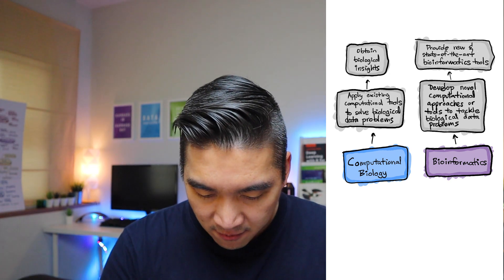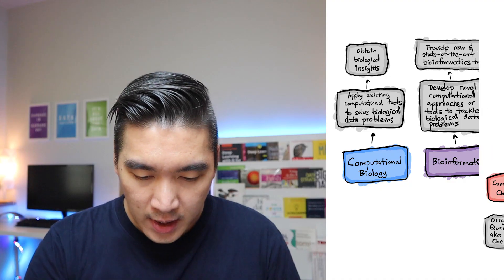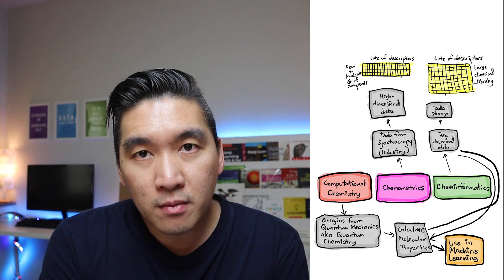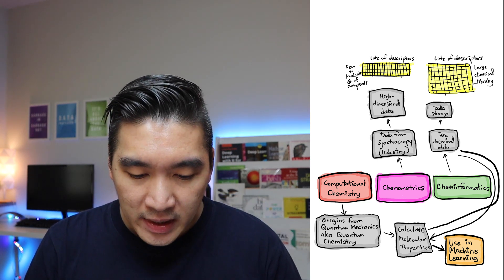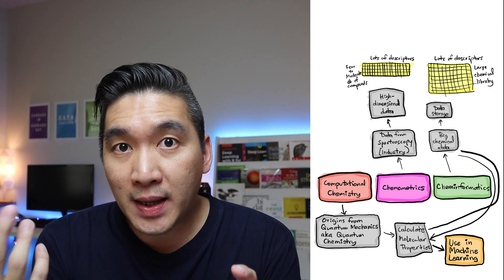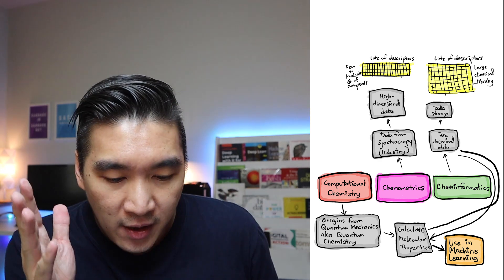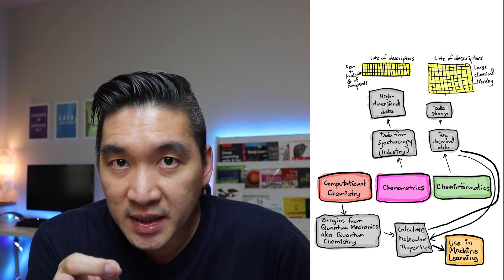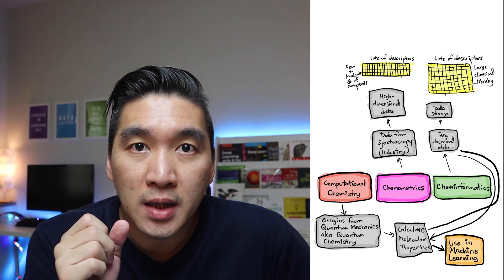Now let's move to computational chemistry and cheminformatics. These three fields are quite similar. Starting with chemometrics: it was a field where computers were recently being introduced, and there's a lot of data in industrial chemistry — data such as spectroscopy data from infrared spectroscopy or mass spectrometry. This area has many variables computed for the chemicals being investigated, with emphasis on optimizing industrial processing.